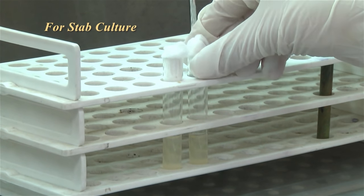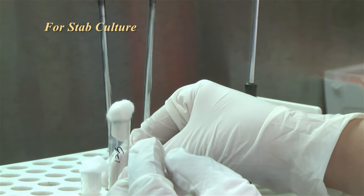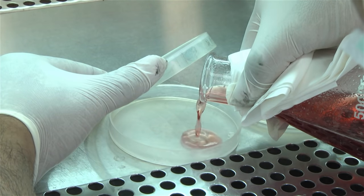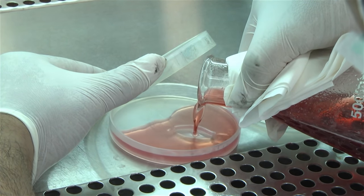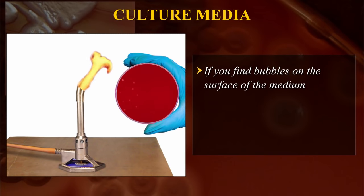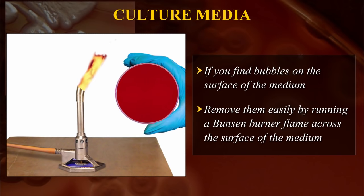If the medium is used for a stab culture, the test tube should be half filled with the medium and allowed to set in an upright position. For distribution into plates, the melted sterile medium is poured on a flat surface. Pour such a volume that the medium is about 4 mm in height from the base of the plate — around 15–20 ml for a plate of diameter 90–100 mm. The plates are left undisturbed till the medium is set. If you find bubbles on the surface, remove them by running a Bunsen burner flame across the surface.